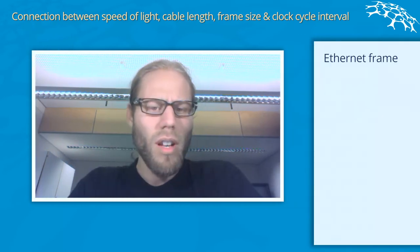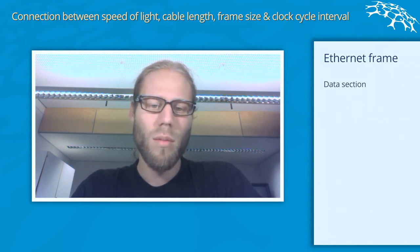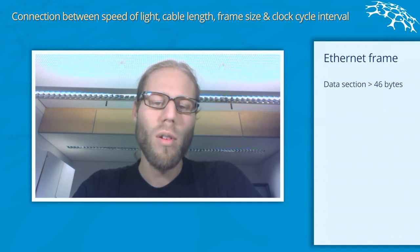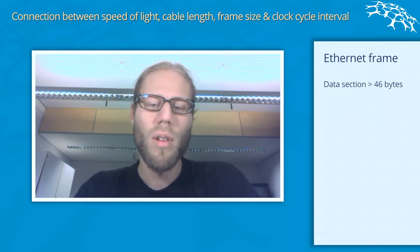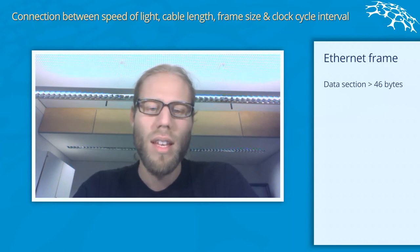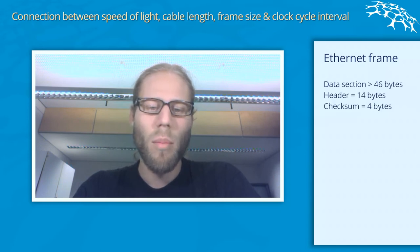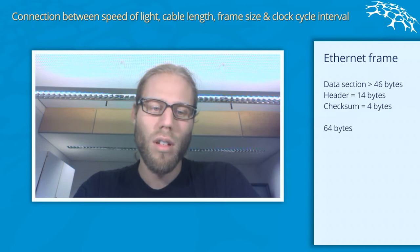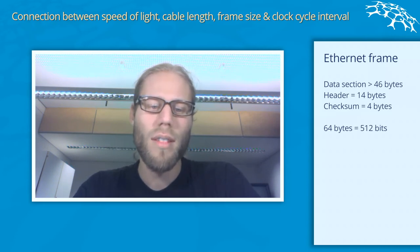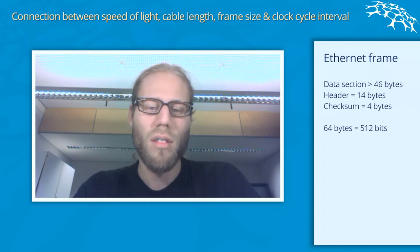So what the inventors of Ethernet did is they said, let's fight this problem by creating Ethernet frames that have to have a certain minimum length. As we already know from the last video, the data section of an Ethernet frame has to be at least 46 bytes. So even if you only want to send one bit of data, you still need a data payload of 46 bytes. Additionally, there are 18 bytes for header and checksum, making 64 bytes total. Multiply by 8 bits per byte and you get 512 bits — the number of clock cycles you occupy the wire when sending an Ethernet frame.